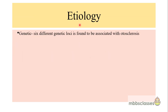The exact cause of otosclerosis is not known, but the most supported etiology is genetic. Six different genetic loci have been found associated with otosclerosis, and it has an autosomal dominant type of inheritance. In approximately half of the cases, patients give a positive family history of the disease.